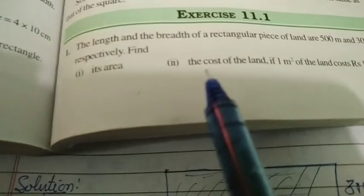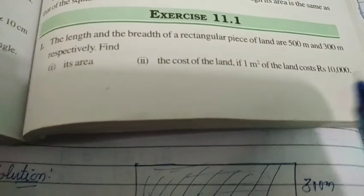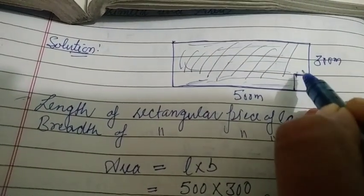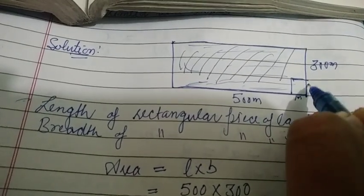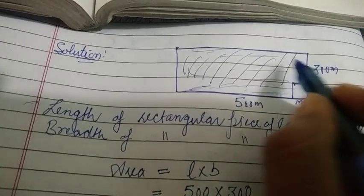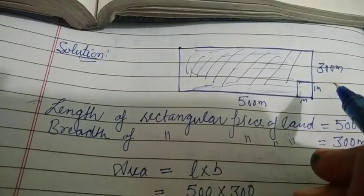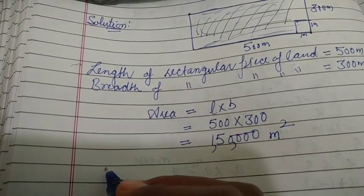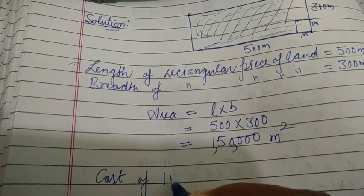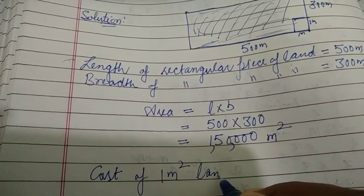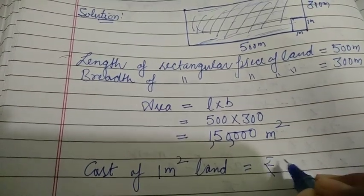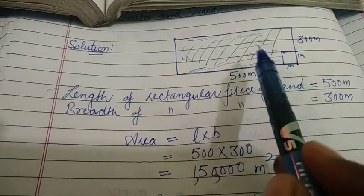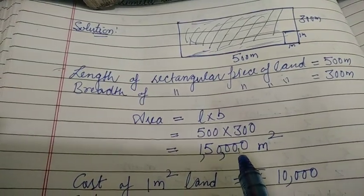Now, what is next? The cost of the land if one square meter of the land costs ₹10,000. For one square meter — just think that the length is one meter and breadth is also one meter — then you'll have to pay ₹10,000. For this whole land, simply multiply the area by 10,000. So write down: cost of 1 square meter of land is ₹10,000.